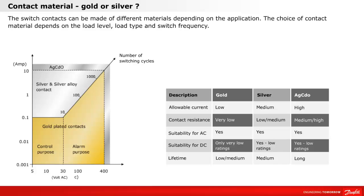In monitoring and alarm applications, there are typically low switching frequencies, and therefore it is possible to have higher electrical loads when using gold contacts. Silver alloy, AGCDO, is the most common contact material for high electrical loads and high switching frequencies.